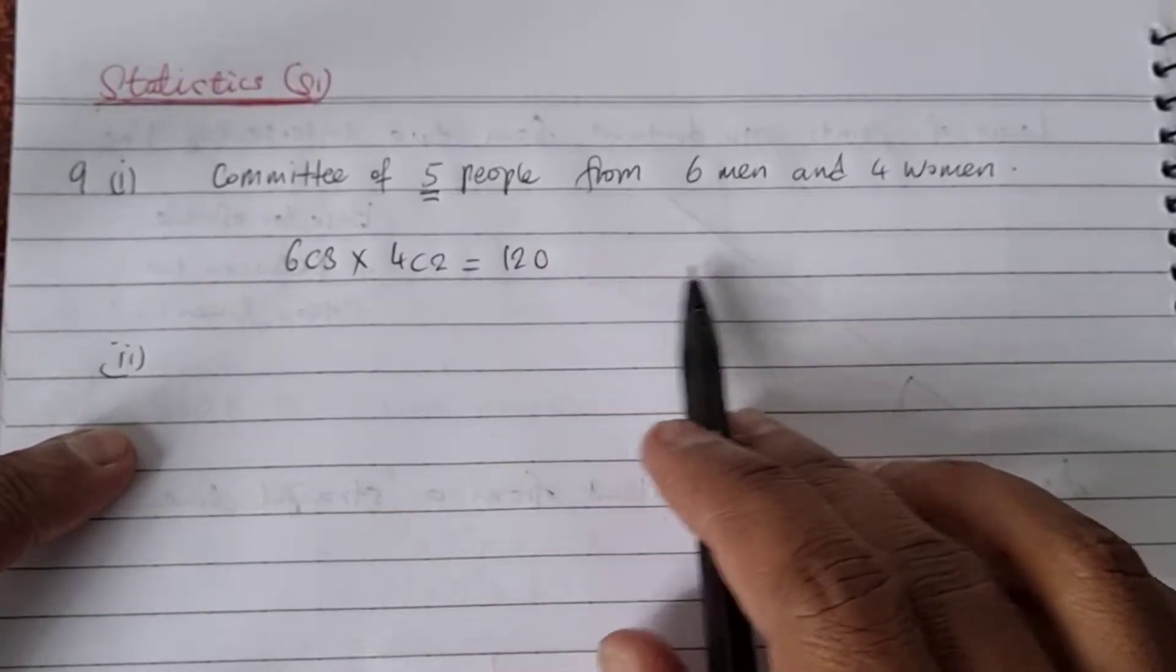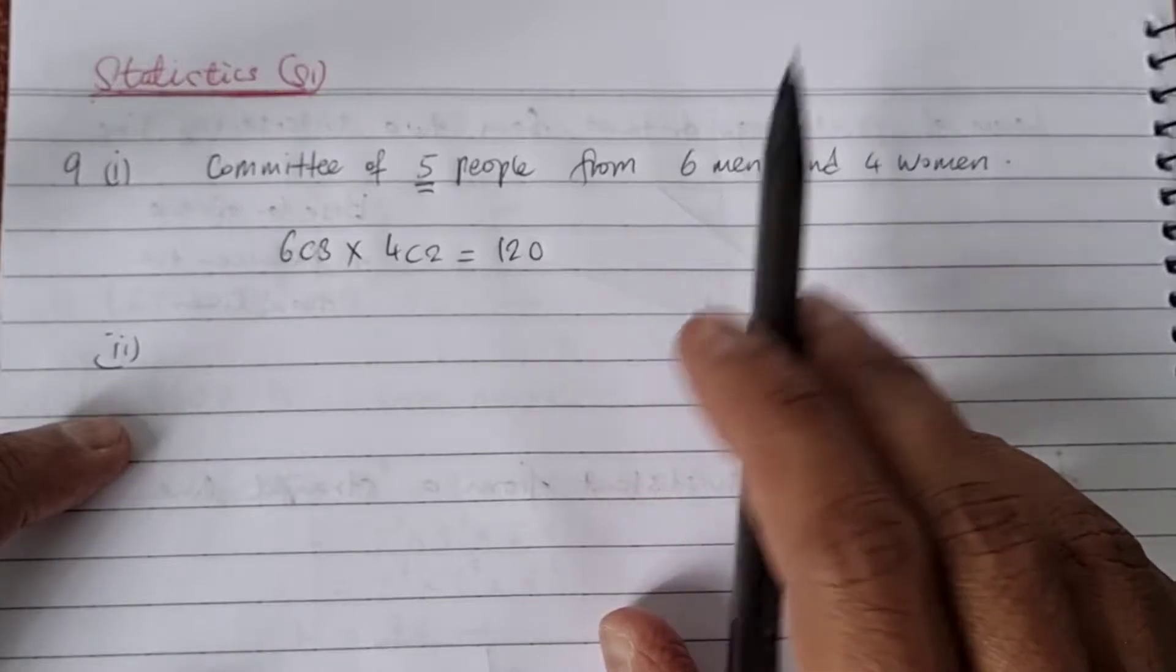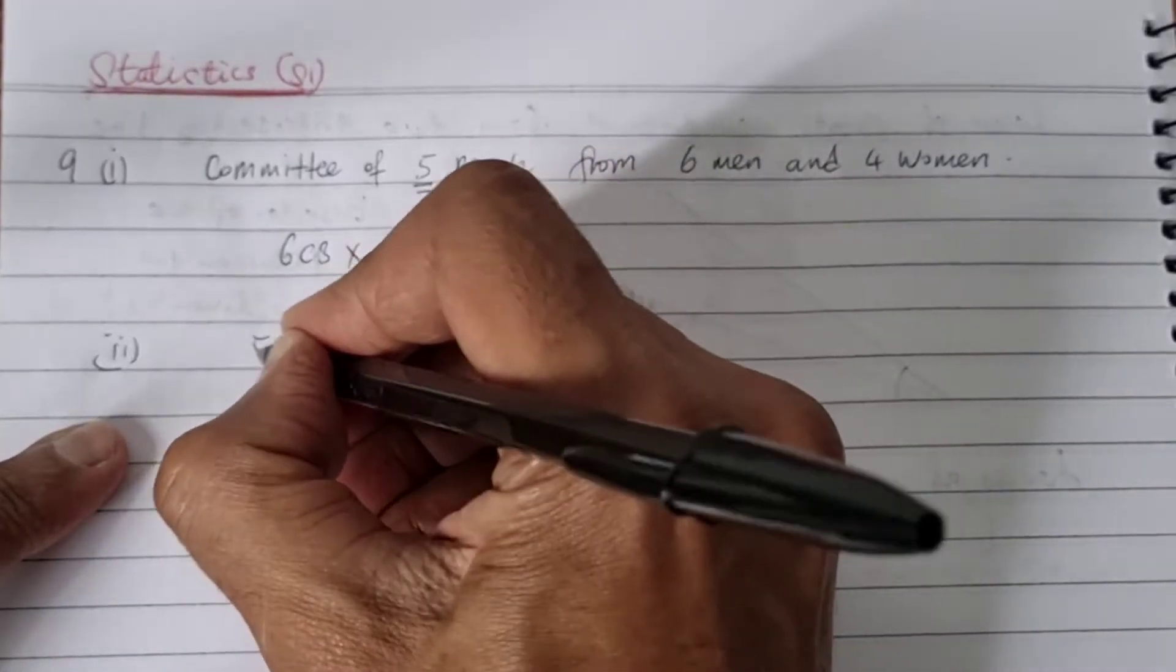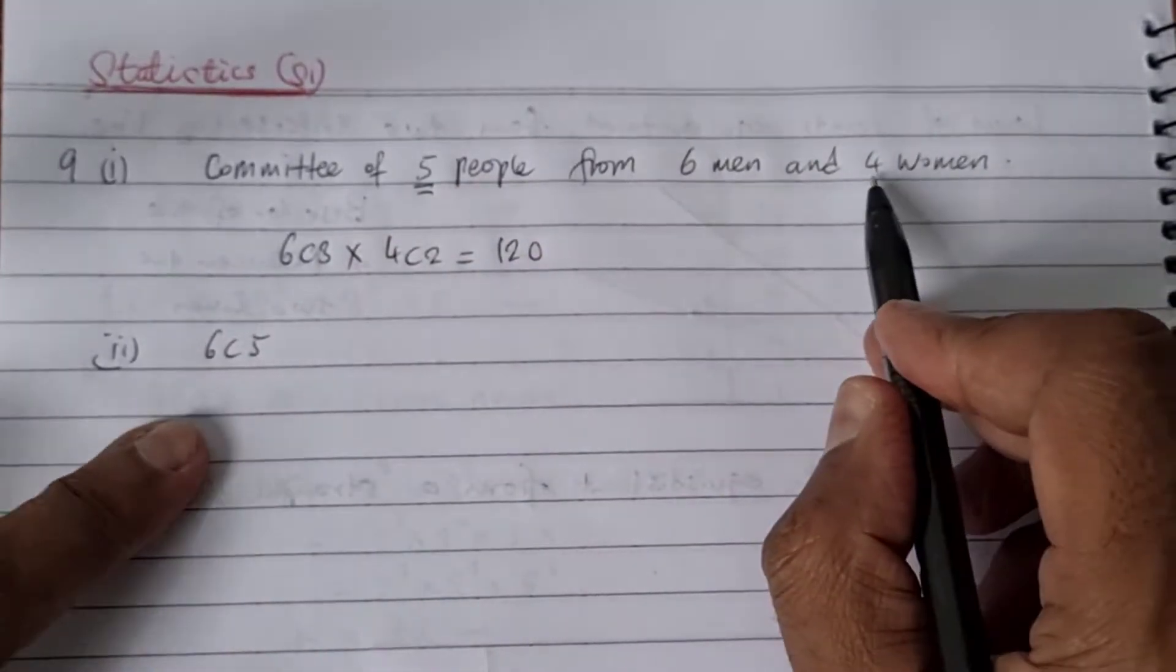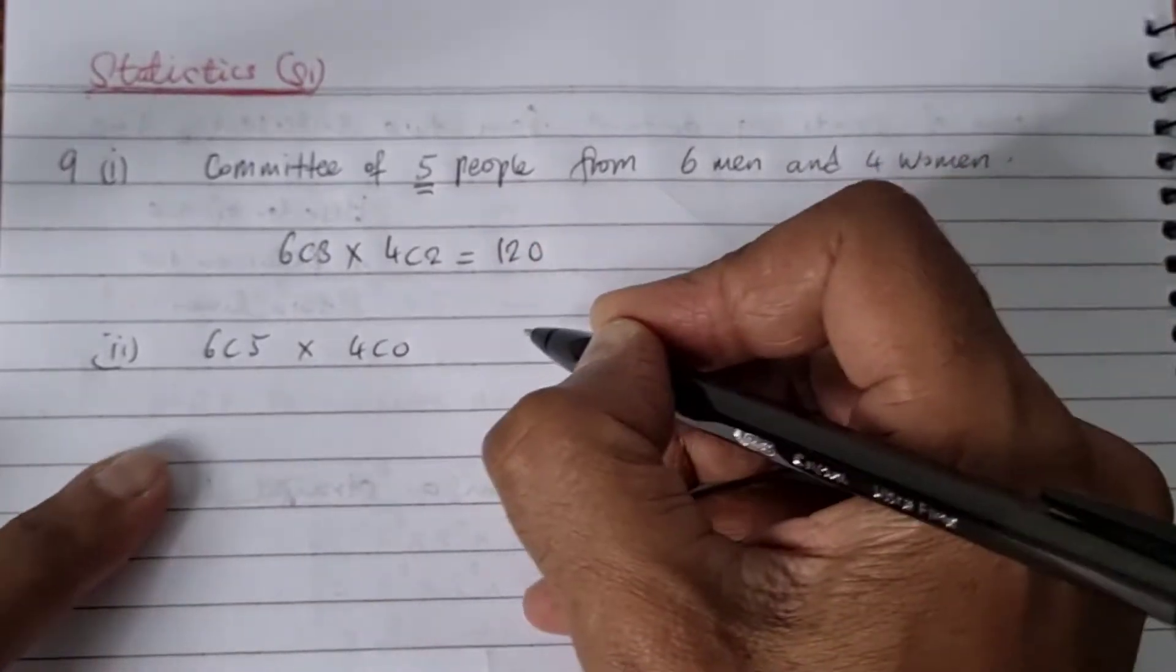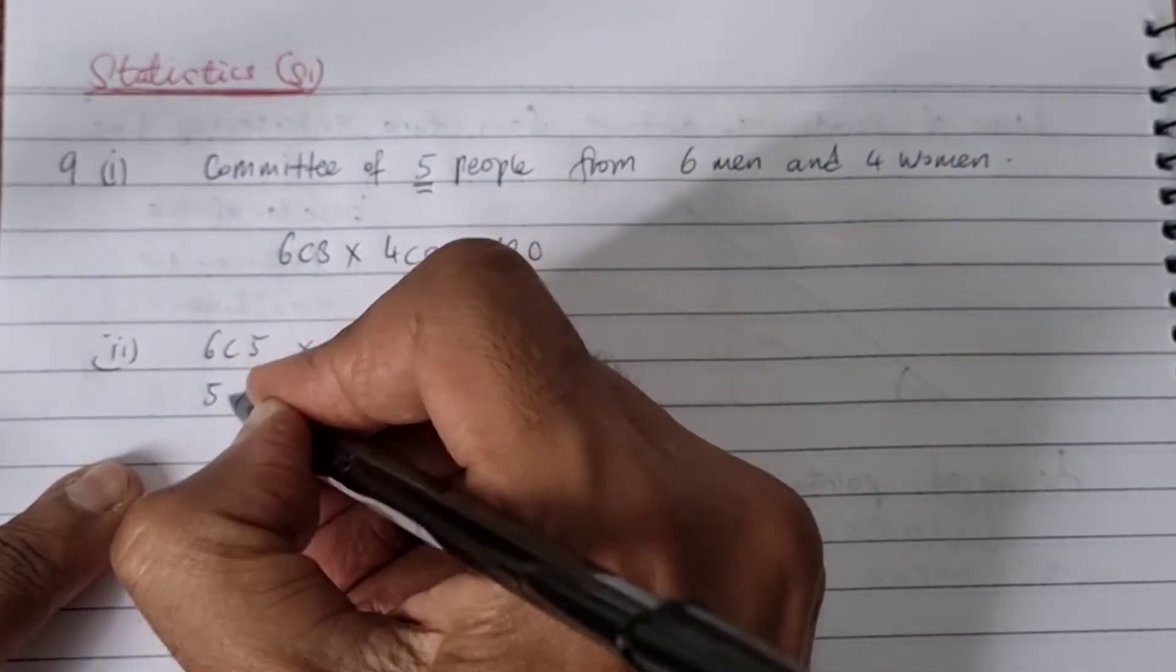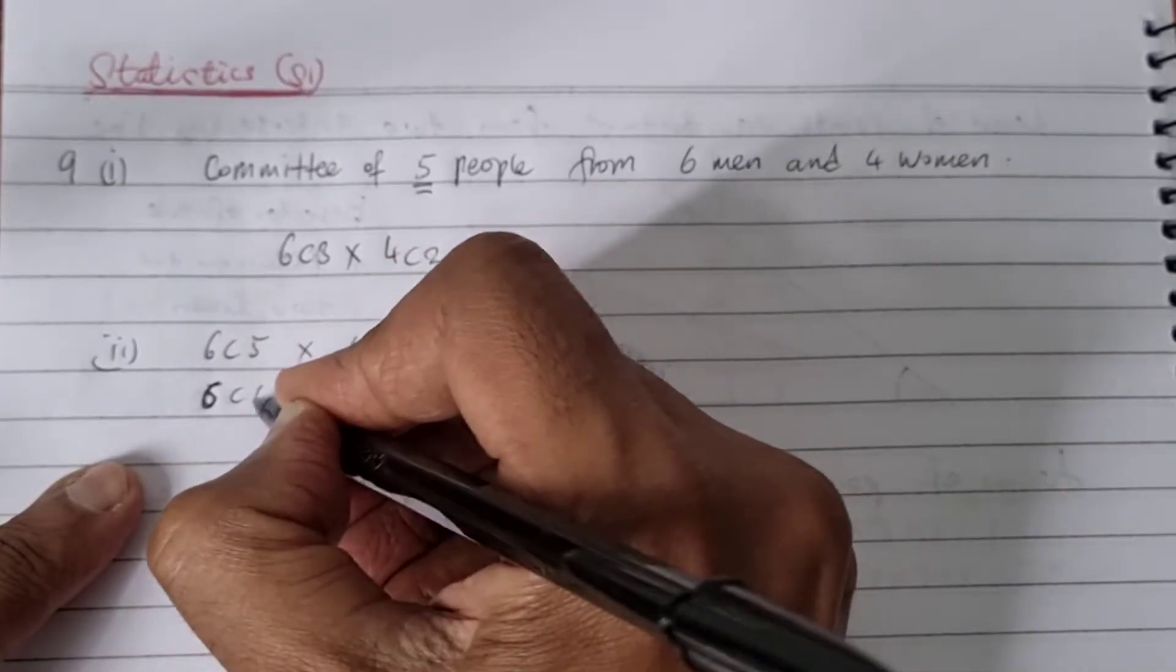So I can start off with, let's say, if I start off with five men, so I can choose five from six, and there must be zero women. So then I can say four choose zero. Then if I have to have more men, if I choose four men,